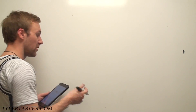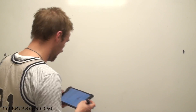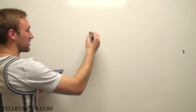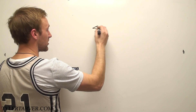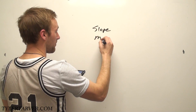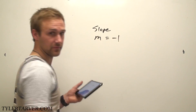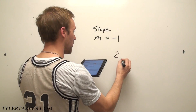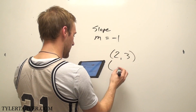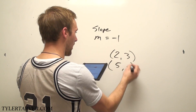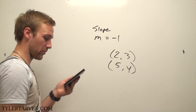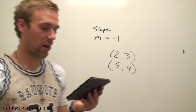So I had a kid on YouTube ask me a question. It was on doing slope. So I'm going to read the question and work the problem. It says: a line with a slope of negative 1 — which is m equals negative 1 — passes through the points (2, 3) and (5, y). Find the value of y.